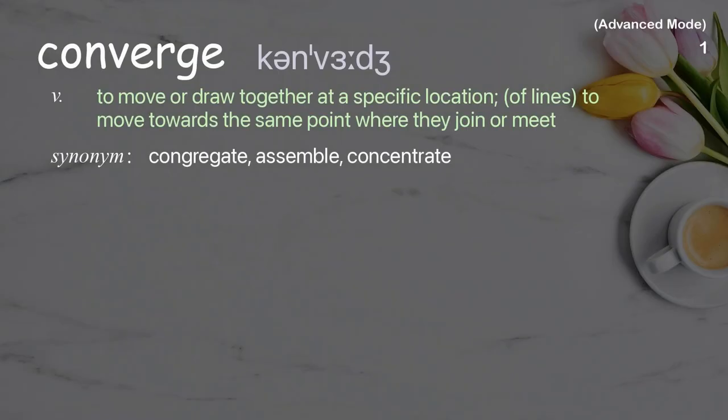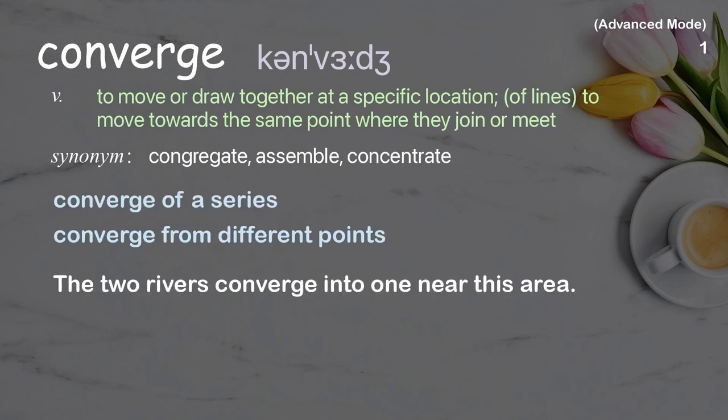Converge: to move or draw together at a specific location; of lines, to move towards the same point where they join or meet. Examples: converge of a series; converge from different points. Example sentence: The two rivers converge into one near this area.